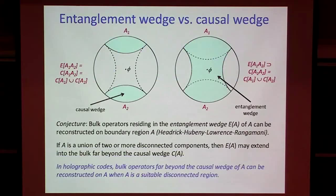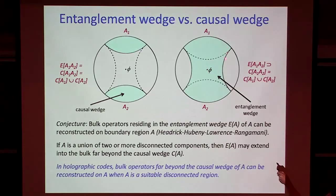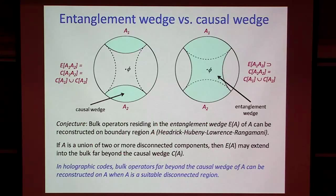Another thing we'd like to address is the question of reconstruction of operators in the so-called entanglement wedge. I could consider a region on the boundary which consists of two connected components separated from one another. The entanglement wedge is defined as the bulk region between A and the minimal geodesic that connects together the boundary points of A, which if the connected components are large enough can contain a region that goes deep into the bulk beyond the causal wedge of either component of A. The standard reconstruction methods don't tell us how to find the operator corresponding to this bulk operator supported on A, but it's been suggested that such a reconstruction should be possible, and we'll see that in holographic codes we can see how reconstruction of operators in the entanglement wedge but far beyond the causal wedge can be realized.